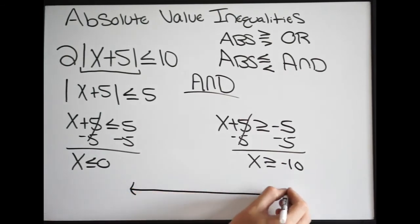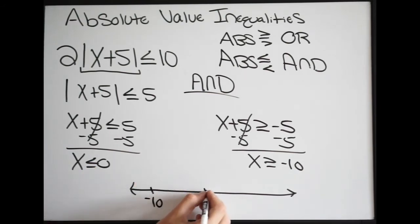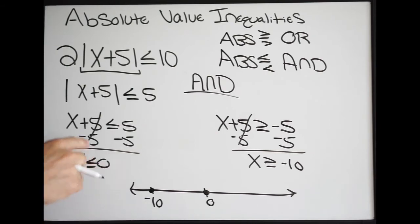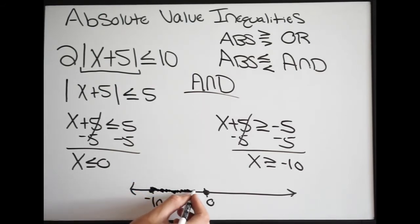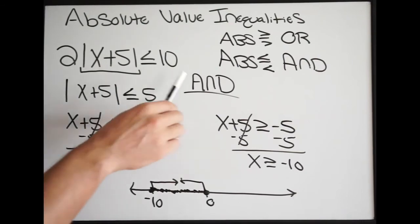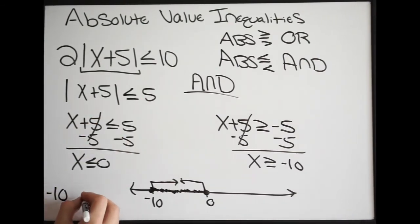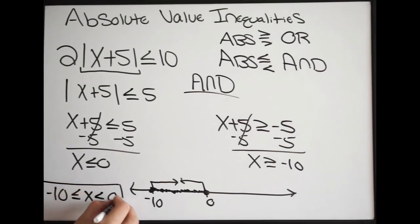Let's graph this on a number line. This is 0, and this is negative 10. On 0 it's a closed circle; on negative 10 it's also a closed circle. Remember, it is a conjunction — meaning we're using AND — so x has to be less than or equal to 0, and x has to be greater than or equal to negative 10. We're shading inside between the two points. Since it is a conjunction, we can write the final solution as: negative 10 less than or equal to x less than or equal to 0.